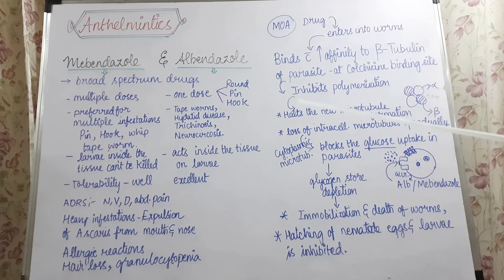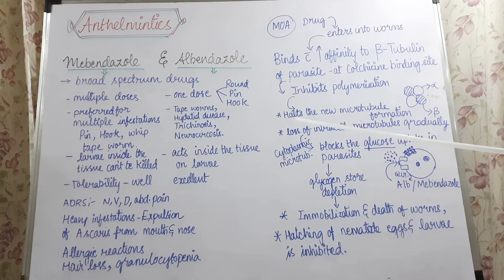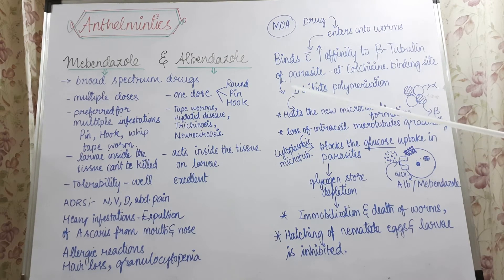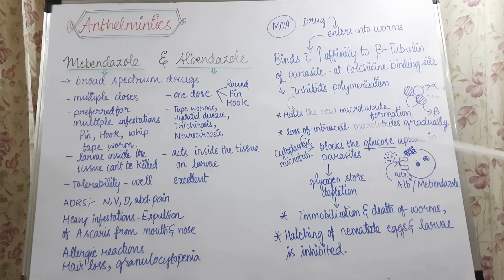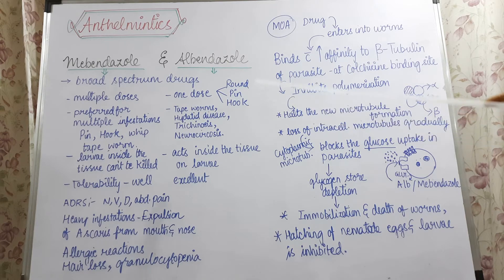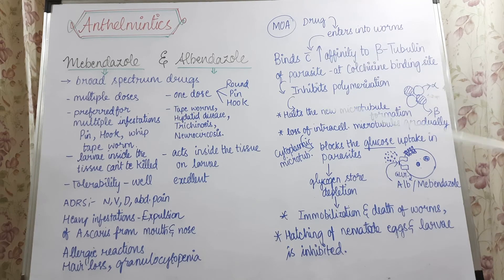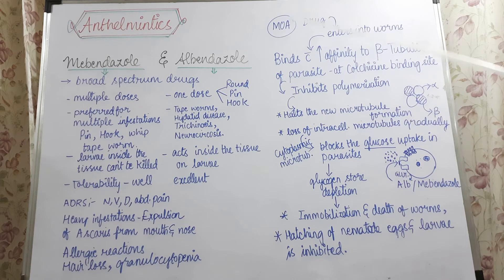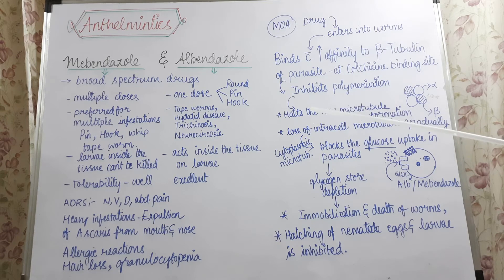Albendazole is mostly preferred. Coming to the pharmacokinetics of albendazole: both drugs are taken orally, and a single dose of albendazole is enough as discussed. In children, 200 mg is sufficient. In adults, 400 mg as a single dose taken at night is used, and preferably with a fatty meal for very good absorption.